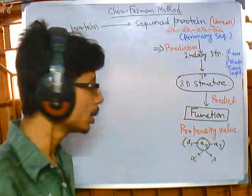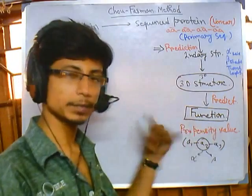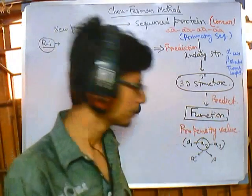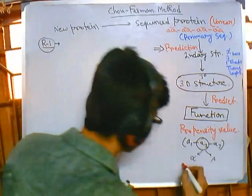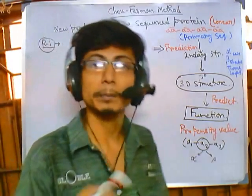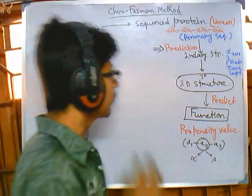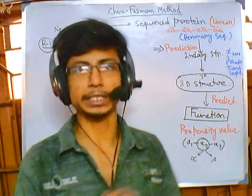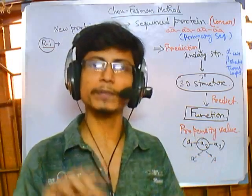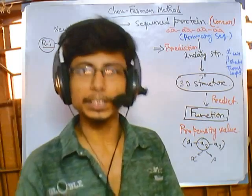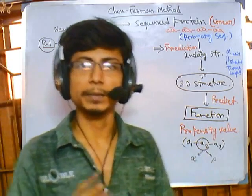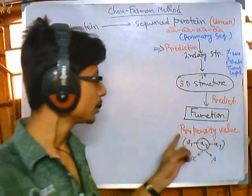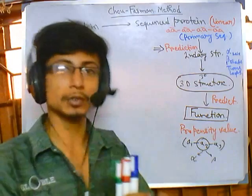We will be detailing propensity values and solving problems with them in our next video. For now we will discuss it briefly. Two other important terms are the secondary structure maker and the secondary structure breaker. To understand these, you must know the basics of amino acids. All 20 amino acids have a similar backbone, simply varying in the R group. Depending upon the R group, some amino acids are positively charged, some negatively charged, some aromatic, hydrophobic, or hydrophilic.